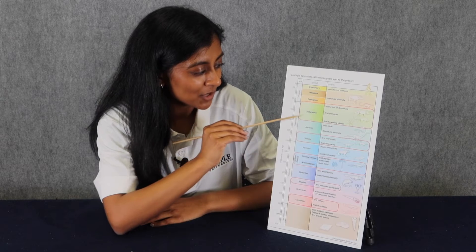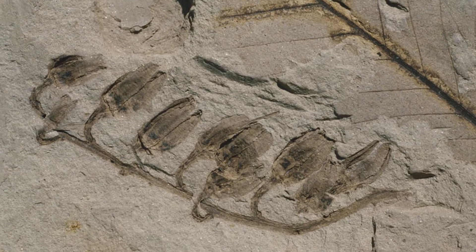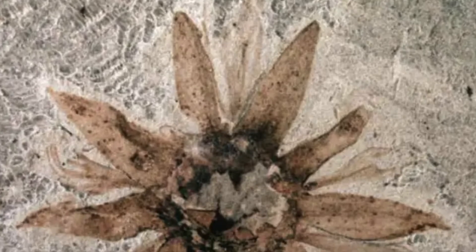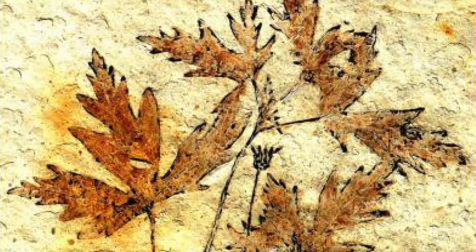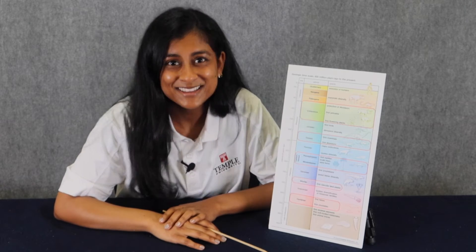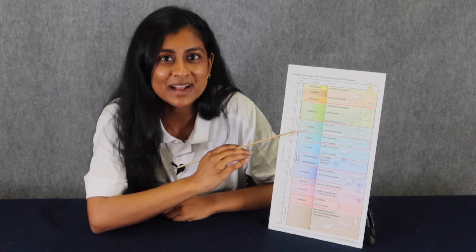At around 140 million years ago scientists found fossils of the first flowers. At around 200 million years ago scientists have evidence of dinosaurs and small mammals roaming our earth. You might know this period of time from those movies — that's the Jurassic period.